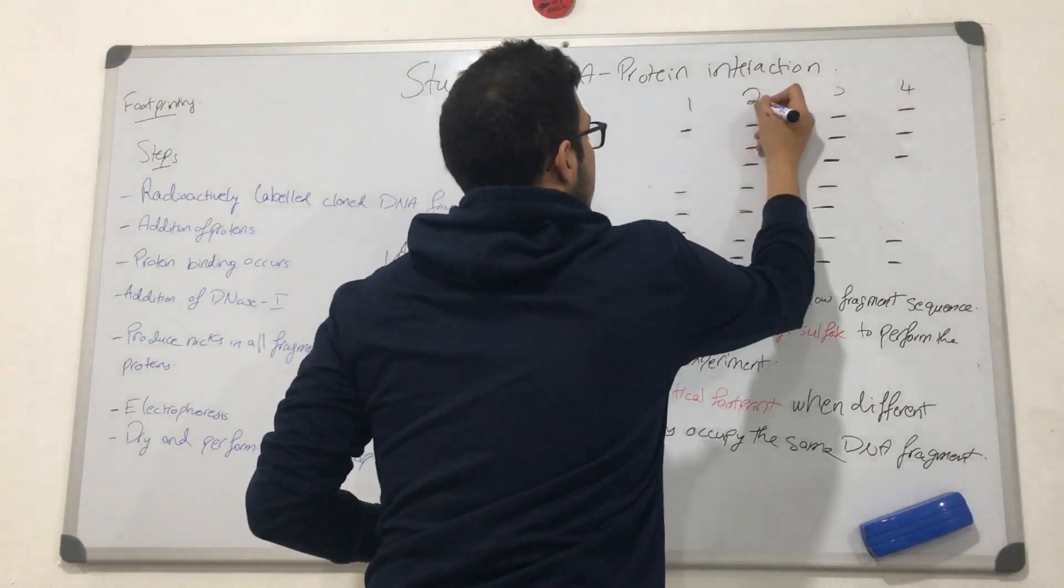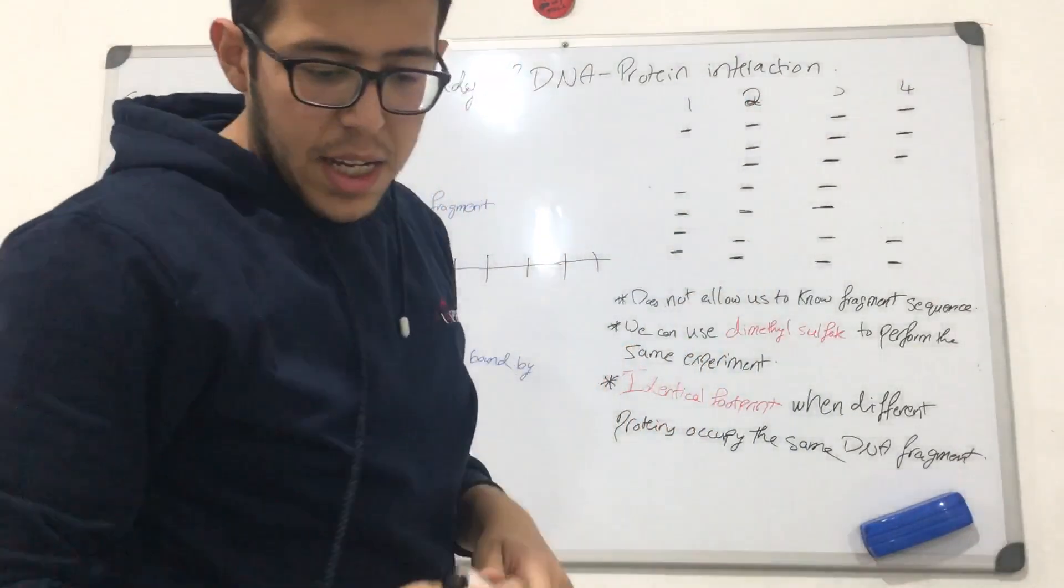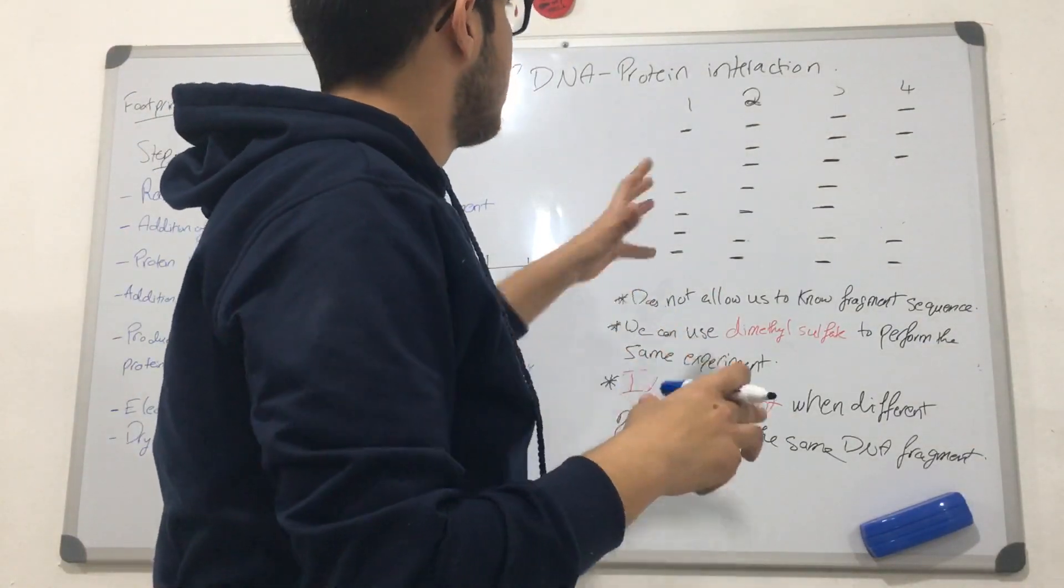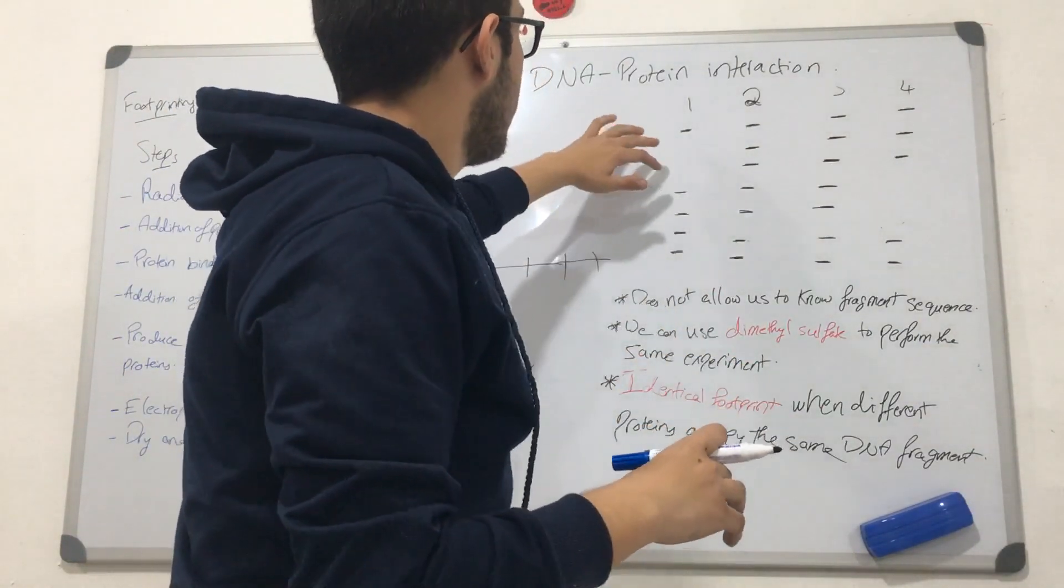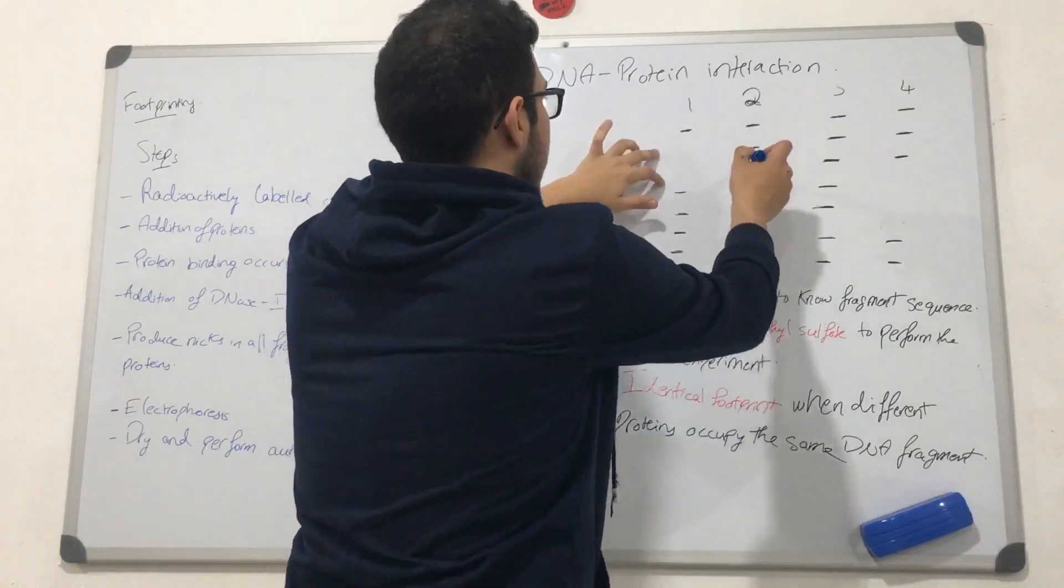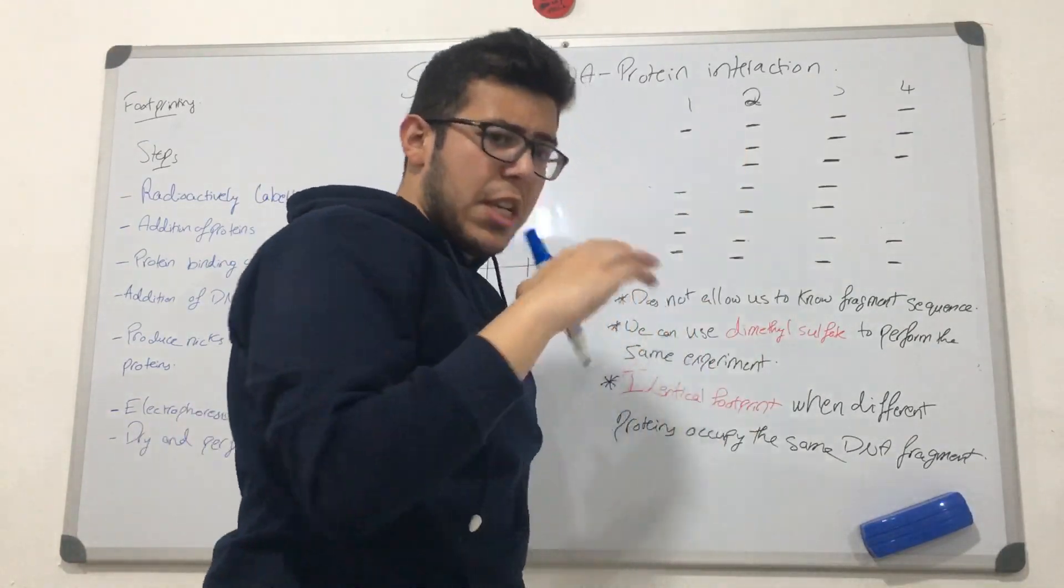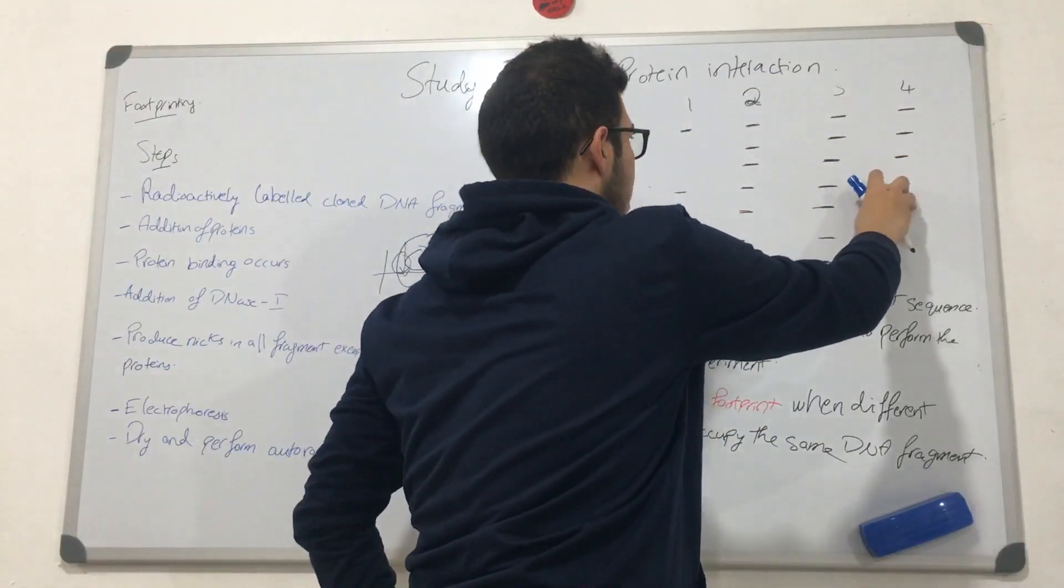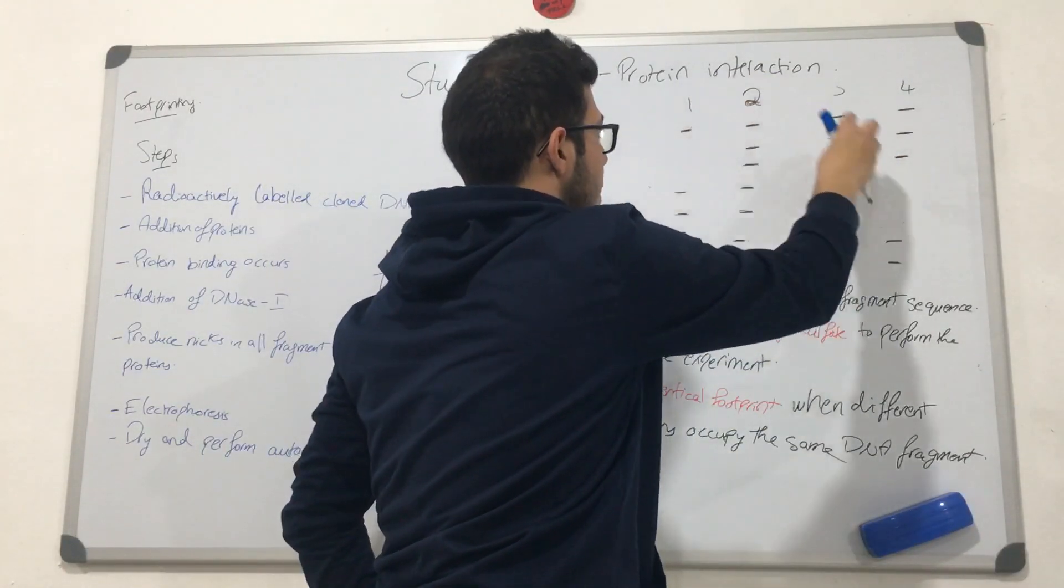After auto-radiography, we're going to be getting this particular view. We're going to be noticing a couple of things. Here first, we don't actually have any fragments here. This is going to be proving that we have a protein that is present at this location and this location of these particular samples.